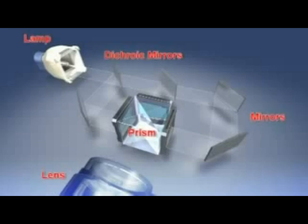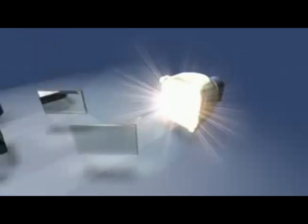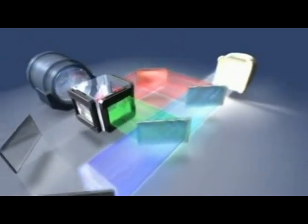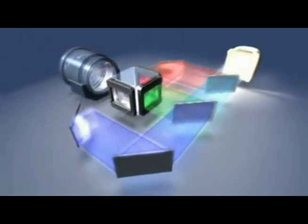Aside from the LCD chips, other key components of the 3-LCD system are the lamp, the dichroic mirrors, the mirrors, the prism, and the projection lens. White light produced by the projector's lamp is broken by the dichroic mirrors into the three primary colors of light: